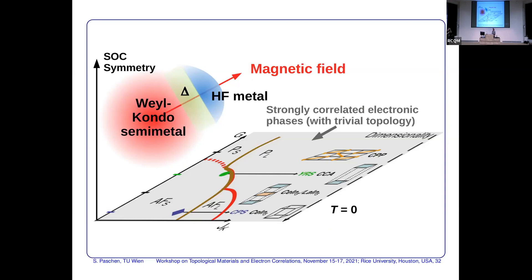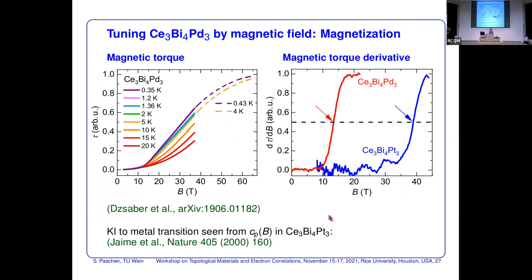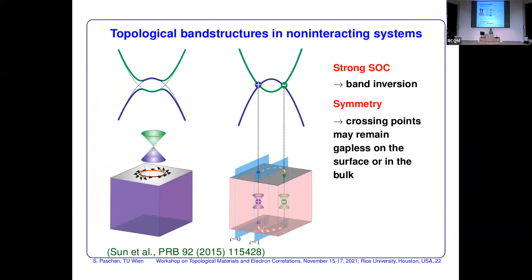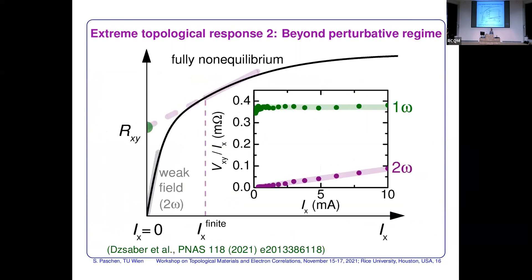Q&A: On computing the nonlinear Hall effect, you need the full non-equilibrium distribution function — that has not been done. Is it just a general expectation that you should have the linear (ω) term? The cartoon shown is not a calculation, but the data points are real — we do observe both ω and 2ω. It's not a calculation; that's the reason only the first perturbative term had been calculated previously.